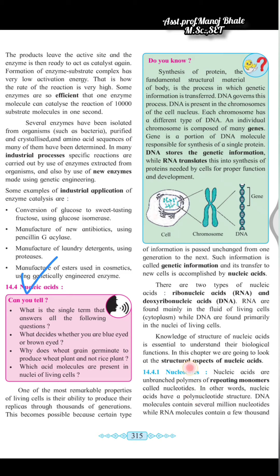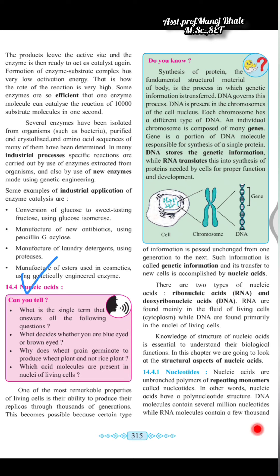The structure of the nucleic acid is essential to understand its biological functions. In this chapter we are going to look at the structural aspects of the nucleic acids. Nucleic acid is a branched polymer of repeated monomers, which are the nucleotides present in the nucleic acid. In other words, nucleic acid has a polynucleotide structure. DNA contains several million nucleotides while RNA has a few thousands of nucleotides.